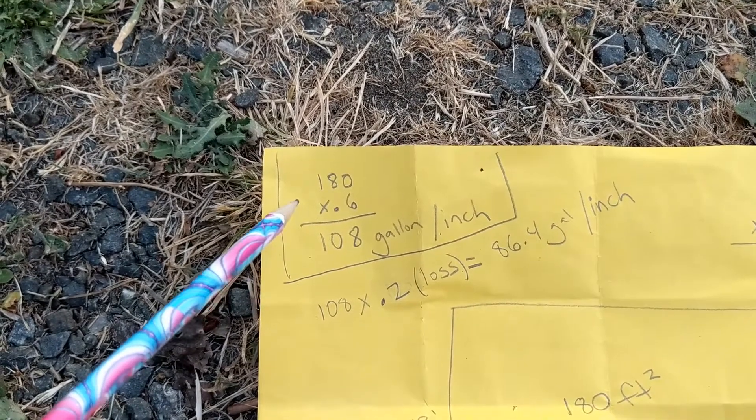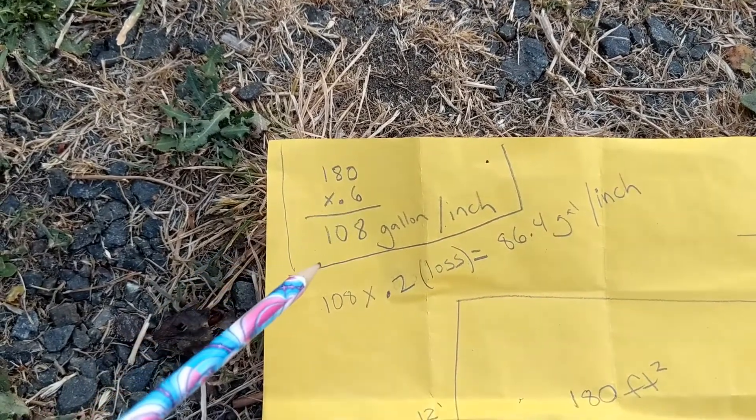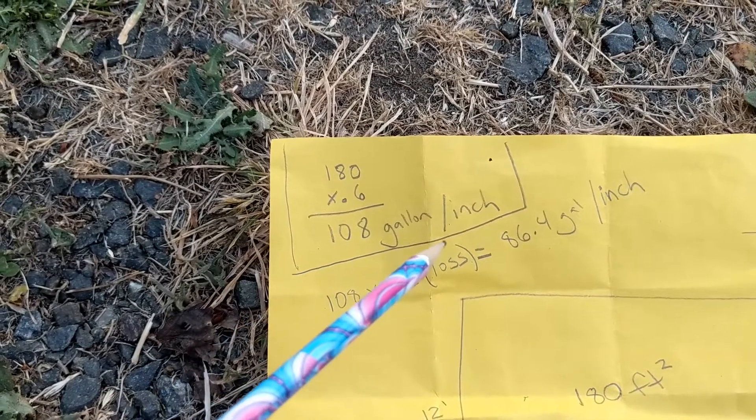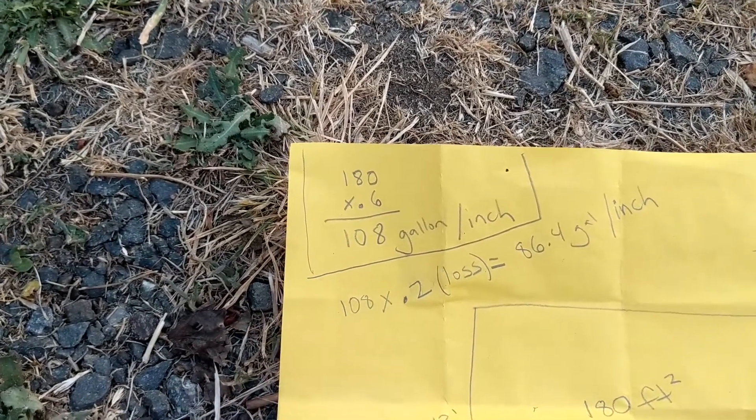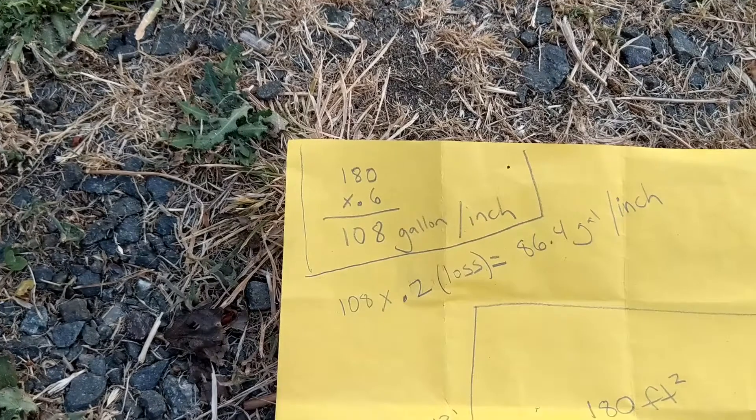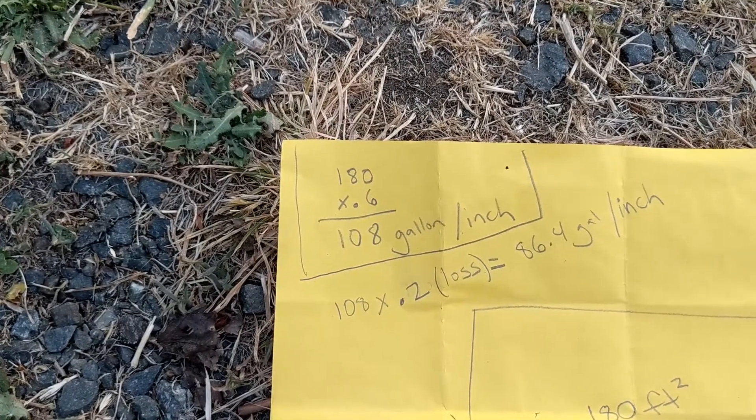And so when we multiply 180 times 0.6 we get 108 gallons per inch of rain. Y cuando multiplicamos 180 por 0.6 obtenemos 108 gallons por pulgada.